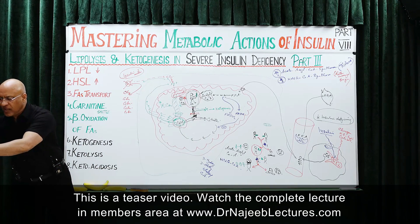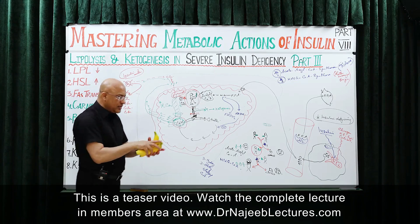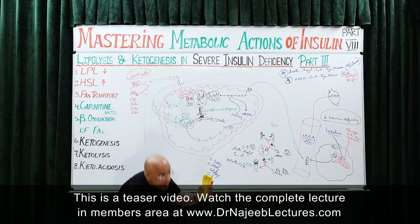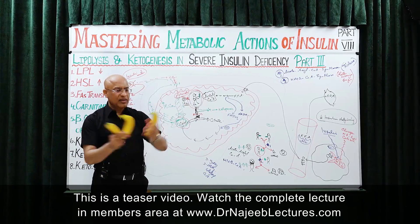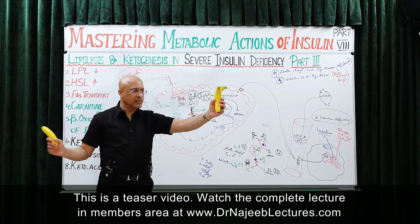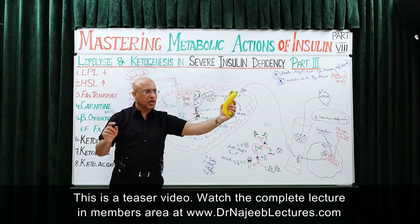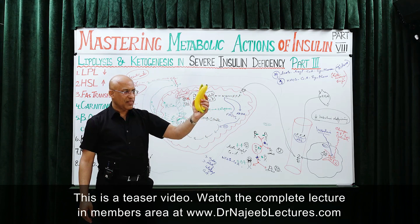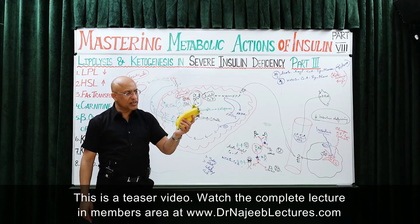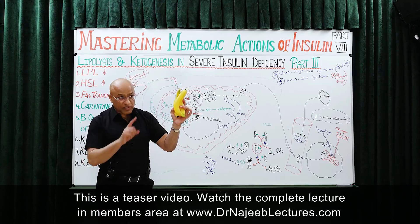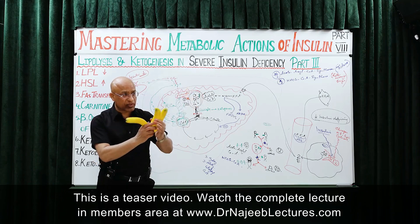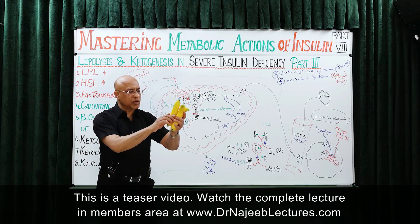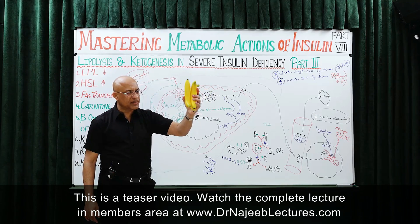Let me recap: acetyl-CoA plus acetyl-CoA, via thiolase, gives acetoacetyl-CoA. Then another acetyl-CoA comes — another two-carbon unit — and HMG-CoA synthase produces HMG-CoA. The clever monkey had its own two-carbon unit, took two from the second CoA, and two more from the third CoA, giving six carbon units total.